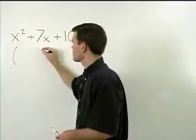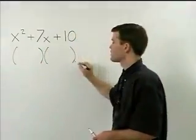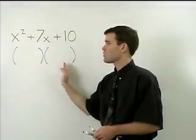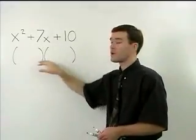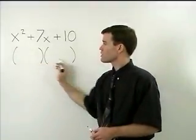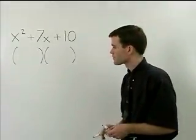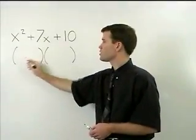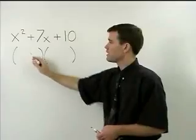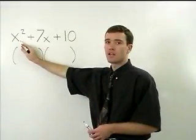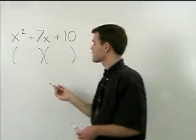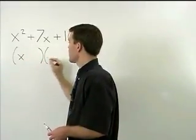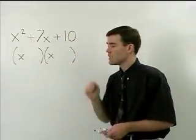In other words, we're going to set up two sets of parentheses and within each set of parentheses will be the two terms that compose each binomial. So what goes inside these parentheses? Well, the first term in each binomial will be a factor of the x squared. Since x squared factors as x times x, we use x as the first term in each binomial.